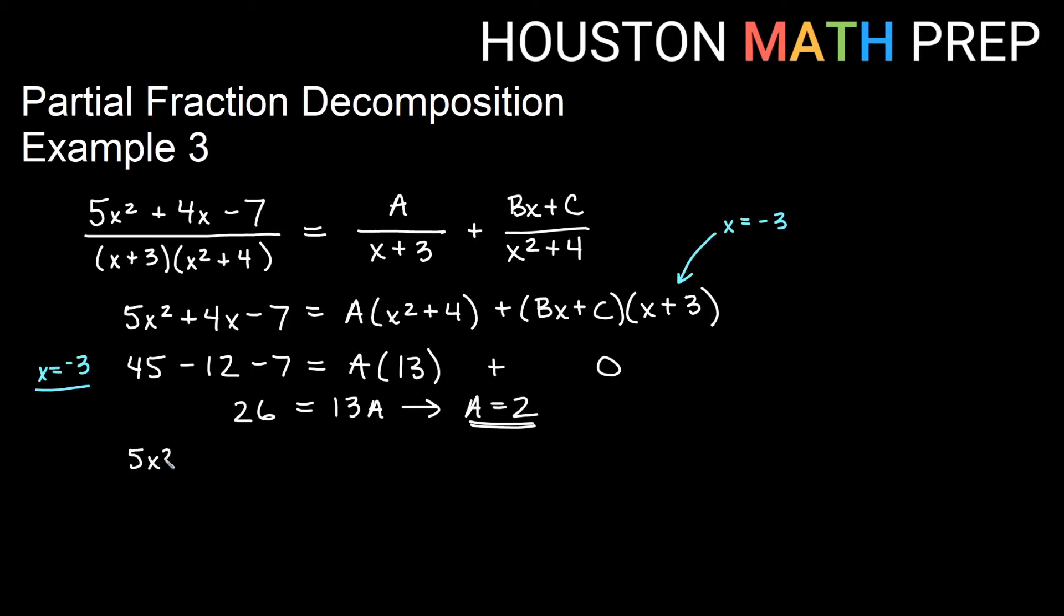So we'll keep our left side, it is already simplified as much as possible. Over here, distributing the A we get A times x squared and we get A times 4 so that would be plus 4A. Distributing Bx times x I get Bx squared. Distributing Bx times 3 we get 3Bx. Distributing C times x we get Cx and C times 3 we get plus 3C.